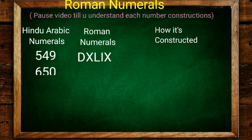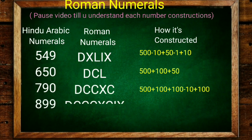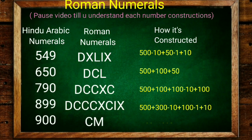549 is 500 plus 40 plus 9. 650, 750, 790, 899. And 900. 899 is 500 plus 300 is 800 plus 90 plus 9.